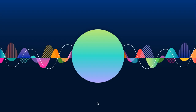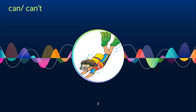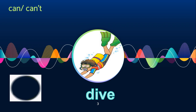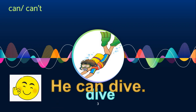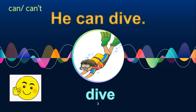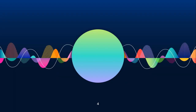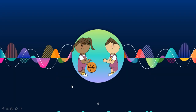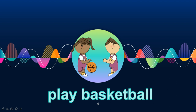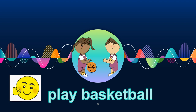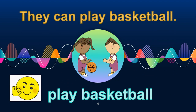Now let's recall can and can't. Look at this picture. What is the boy doing? Yes, dive. The boy is diving. So we can use: he can dive. The sentence is he can dive. Now let's look at another picture. What are they doing? Yes, they are playing basketball. So how would the sentence be? They can play basketball.